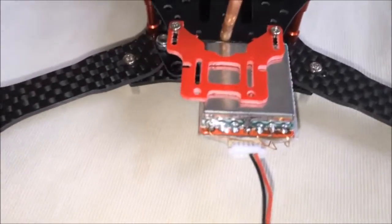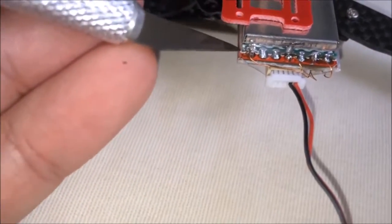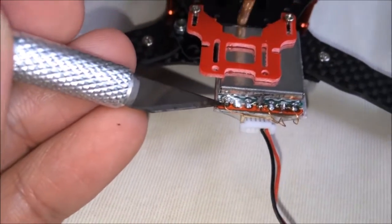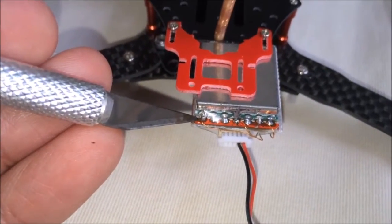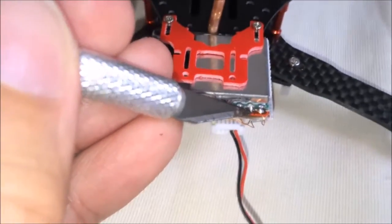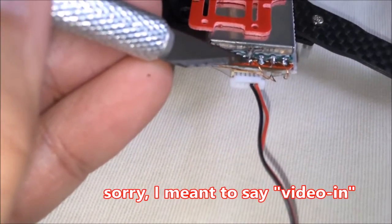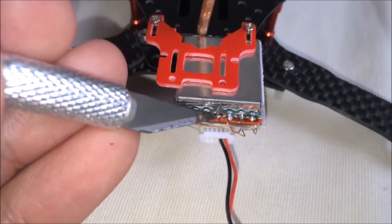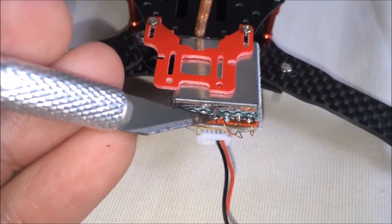So here you can see I've already soldered the magnet wires. This is the 4V output to the Mobius camera. This one is the video out to the Mobius camera. And this one here is ground, which is the black wire connection for both.